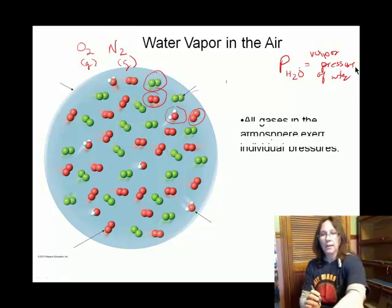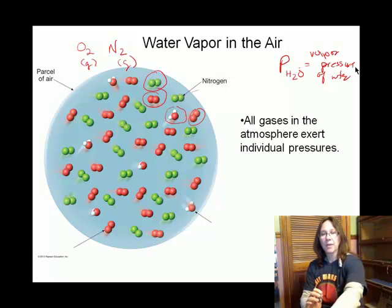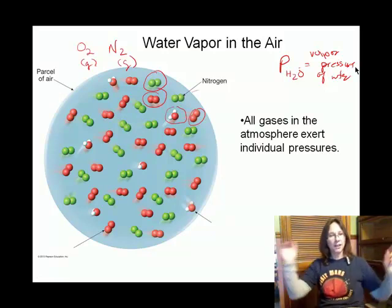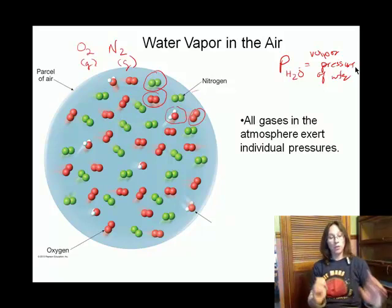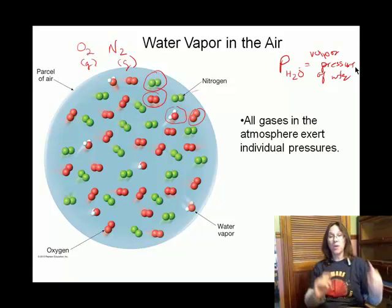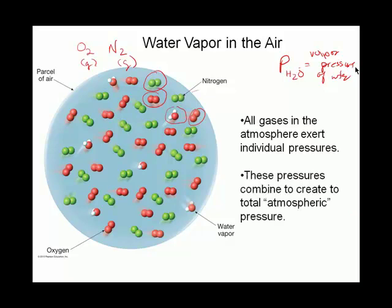In the parcel of air diagram, the green molecules are nitrogen, the red are oxygen (N2 and O2), and the red-with-whites are water vapor. One characteristic of a gas mixture like this is that all of the pressures — the pressure of the water, the pressure of the nitrogen, the pressure of the oxygen — work together to create an overall atmospheric pressure. If you sum them, you get P total.